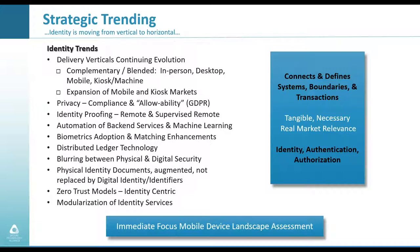Right now, identity is trending away from vertical markets where identity was associated with particular products like a passport, PIV card, CAC card, driver's license, or employee access credential. Identity is starting to move horizontally across markets, and we're seeing blending of in-person, desktop, mobile, and machine-based identities that are becoming increasingly complementary. There's a big expansion within the mobile and kiosk markets. Privacy continues to expand, and identity proofing changes from NIST now allow us to use technology to add convenience, reduce cost, and leverage the strength of mobile devices.